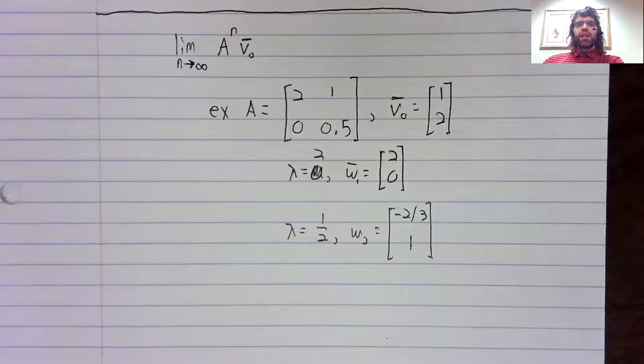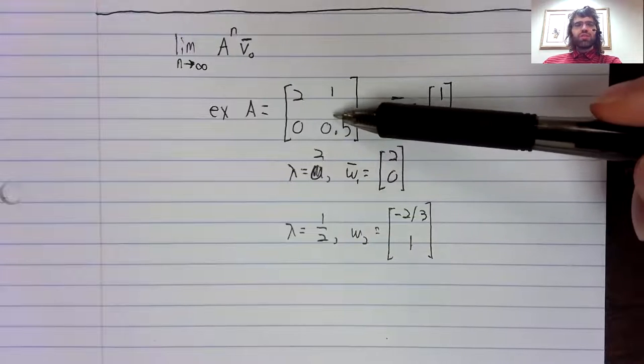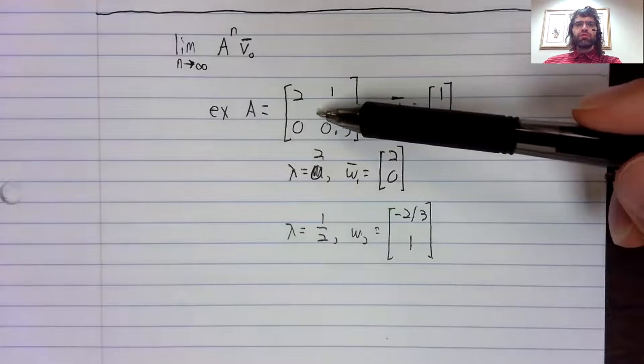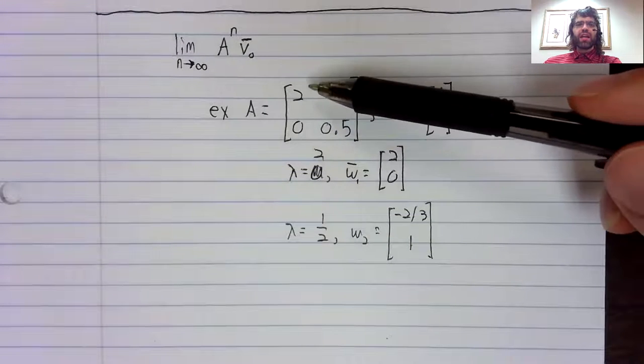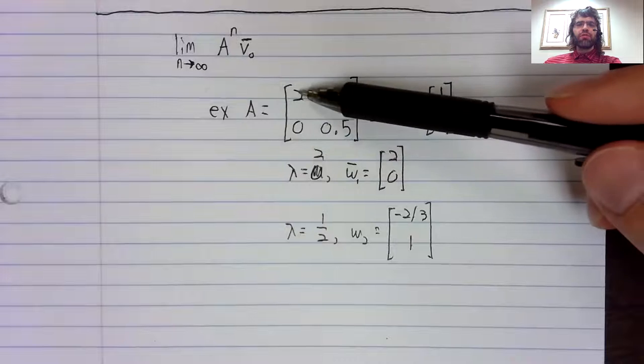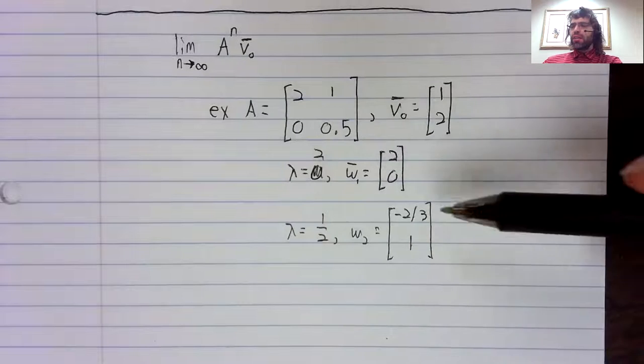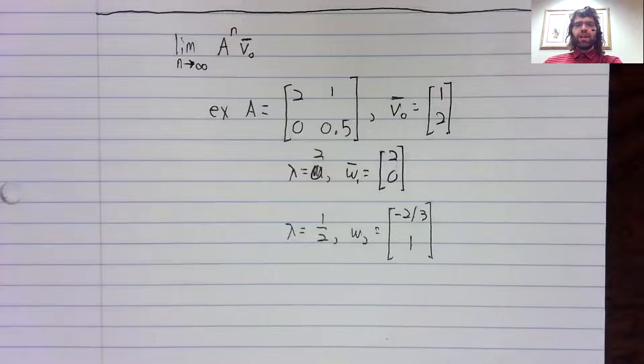I mentioned eigenvalues and eigenvectors. This is a triangular matrix, so its eigenvalues can be read right off, and then the eigenvectors can be found.